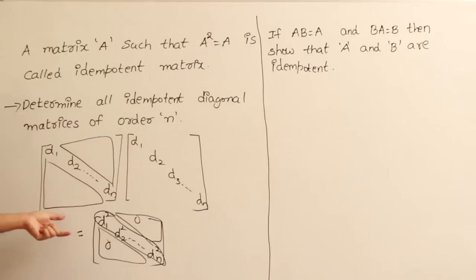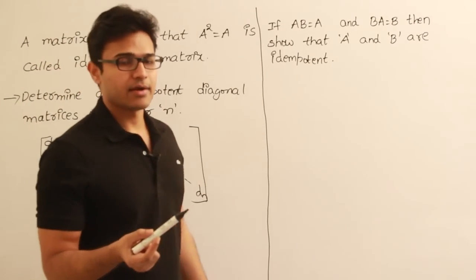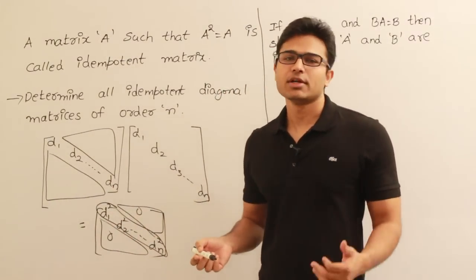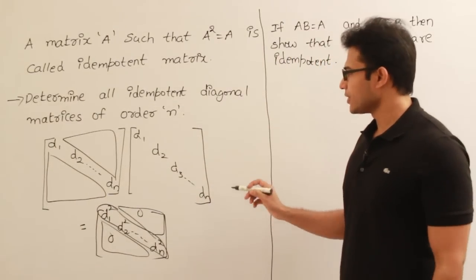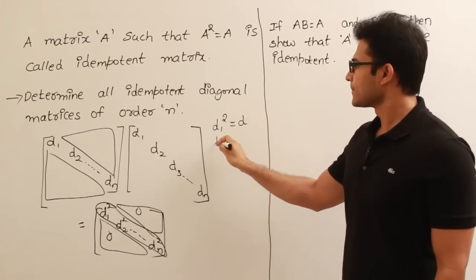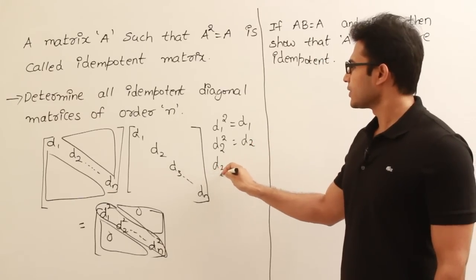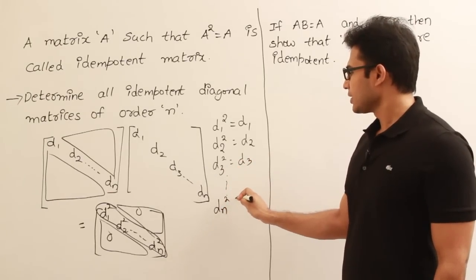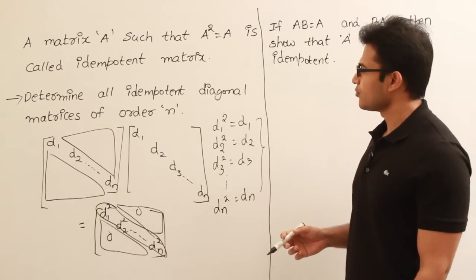Now, to enforce idempotency, we equate the squared matrix with the original matrix. Taking corresponding elements and equating them, we get: D1 squared equals D1, D2 squared equals D2, D3 squared equals D3, and so on. Only in this case will the matrix be an idempotent matrix.